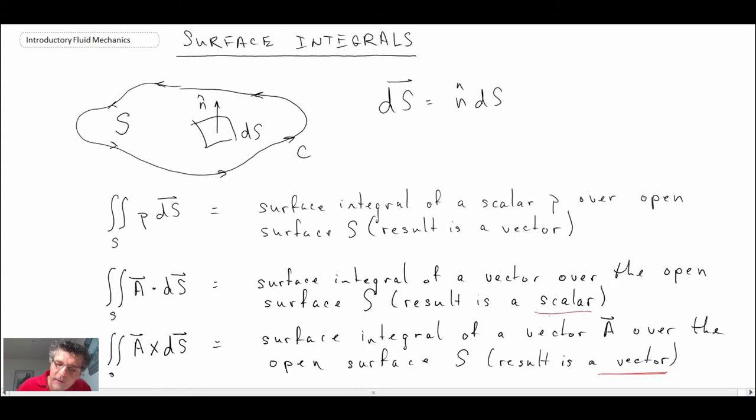We saw when we had the dot product, the result would be a scalar, and then if we have a scalar field and we're integrating over the area, the result of that would be a vector, because we have a scalar multiplied by a vector and it remains a vector. So those are surface integrals over open surfaces.